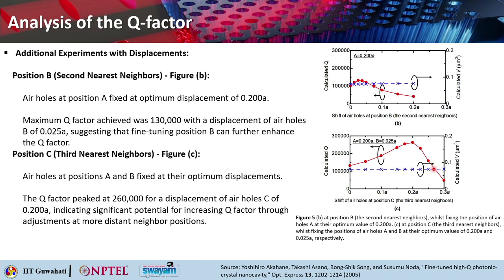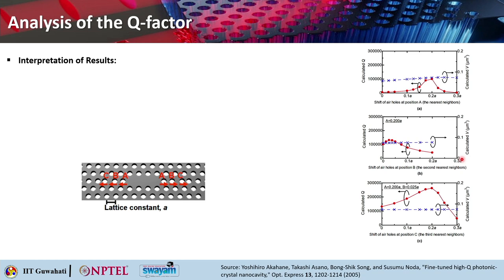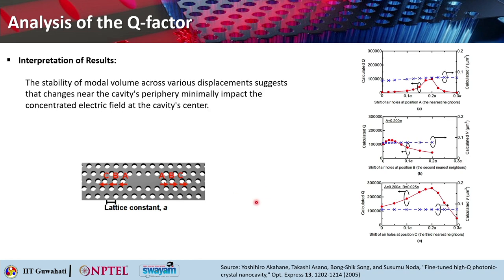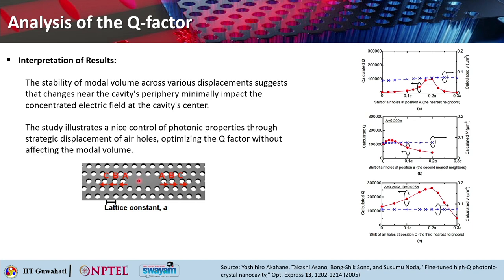The stability of modal volume across the displacement in each case tells us that changes near the cavity's periphery minimally affect the concentrated electric field at the center. So V remains essentially the same while Q is increased, essentially increasing the Q/V ratio. This study illustrates nice control of photonic properties through strategic displacement of air holes near the cavity, optimizing Q without affecting the modal volume.